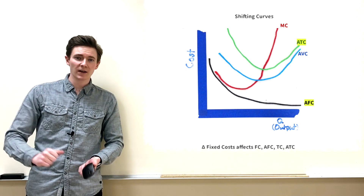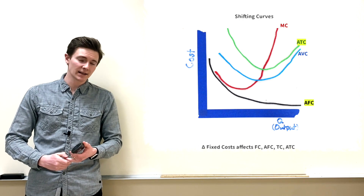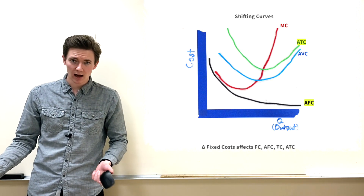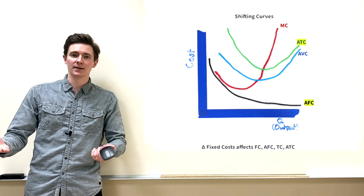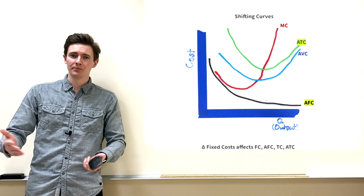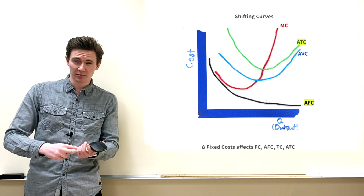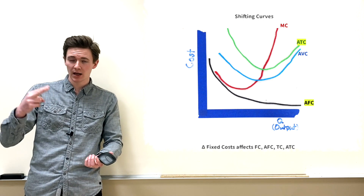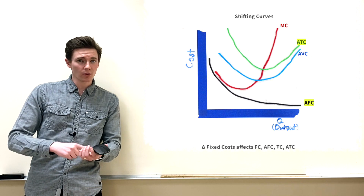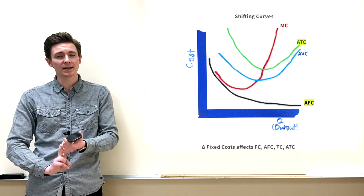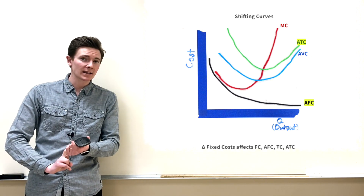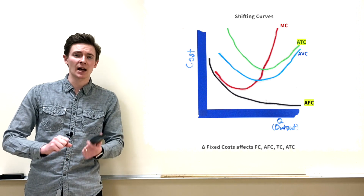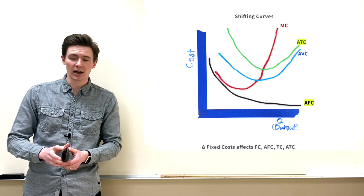For example, if each company pays a $1,000 lump-sum tax to the government every year, fixed costs and average fixed costs go up. Total cost and average total cost are also affected, since total cost equals fixed plus variable cost and ATC equals AFC plus AVC.